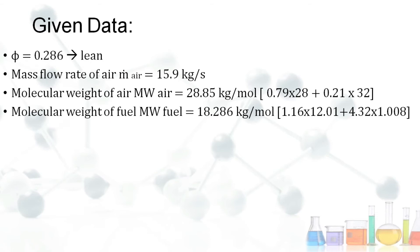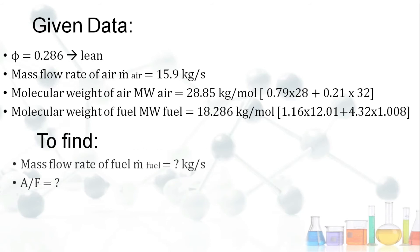For C₁.₁₆H₄.₃₂, multiplying and adding the respective components gives MW_fuel = 18.286, or approximately 18.3 kg/mol. We need to find two values: the fuel mass flow rate (ṁ_fuel) and the air-fuel ratio.